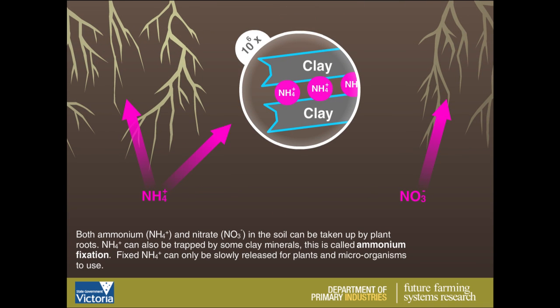Both ammonium and nitrate in the soil can be taken up by plant roots. Ammonium can also be trapped by some clay minerals — this is called ammonium fixation. Fixed ammonium can only be slowly released for plants and microorganisms to use.